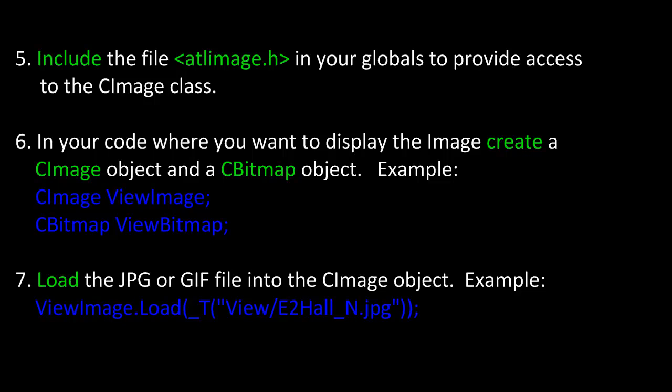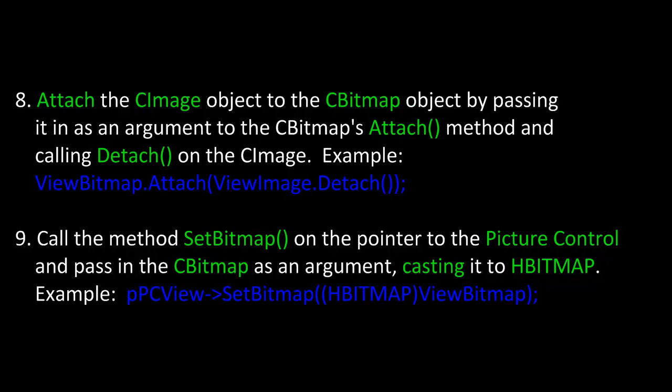Next, in step 7, we want to load the JPEG or GIF file into the CImage object using the load method. Then we need to attach the CImage object to the CBitmap object by passing it as an argument to the CBitmap's attach method and calling detach on the CImage object. Here's our instance of CBitmap ViewBitmap calling the attach method, passing in our CImage ViewImage object and calling its detach method. Finally, we can call SetBitmap on the pointer to the picture control, passing in the CBitmap as an argument and casting it to an HBITMAP object.